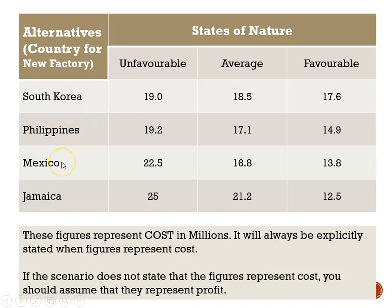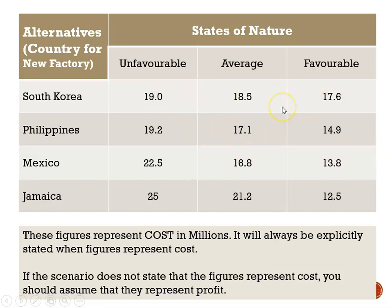If we choose to build in Mexico: under unfavorable conditions, $22.5 million; under average conditions, $16.8 million; and under favorable conditions, $13.8 million. So we're uncertain of exactly what the cost will be per location, but it should be somewhere in between these based on how conditions turn out.